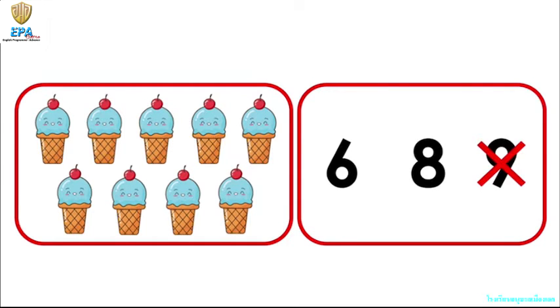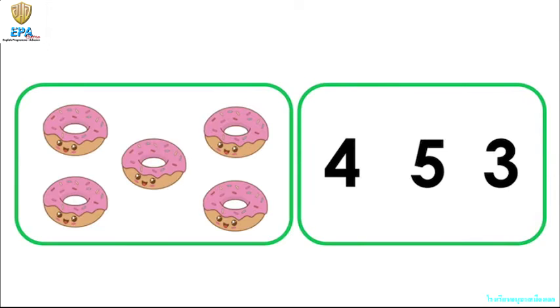Let's go to the next picture. The next pictures are donuts. First, we have to count the donuts. Let's start counting. One, two, three, four, five.